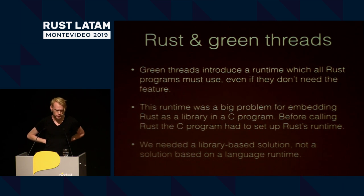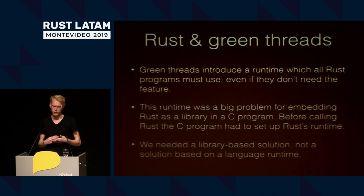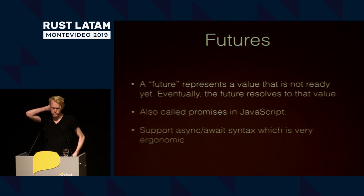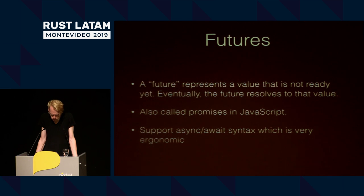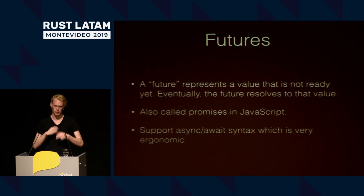Having removed green threads, we still needed some solution to async I/O. What we realized was it needed to be a library-based solution — a good abstraction for async I/O that was not part of the language or runtime, but a library you could opt into when you needed it. The most successful library-based solution is the concept called futures, also called promises in JavaScript. The idea of a future is that it represents a value that may not have been evaluated yet — you can manipulate it before it actually resolves, and eventually it will resolve to something.